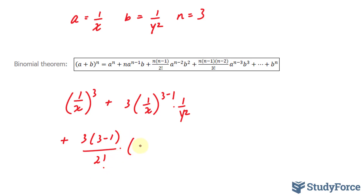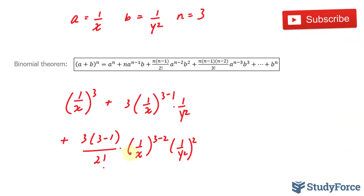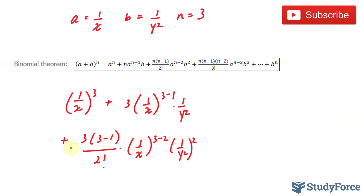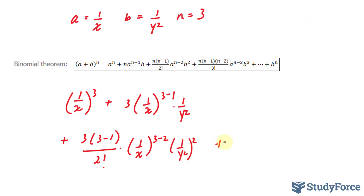Plus n — which is three — times three minus one, over two factorial, times our a value of one over x to the power of n minus two. Three minus two is written right there. Times our b, which is one over y squared to the power of two. Now remember, we know that we should end up with four terms. So our final term will simply be one over y to the power of two — our b term — to the power of three.